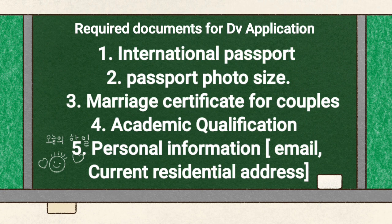The last requirement is your personal information. You need to have an email address. You also need a phone number, but the phone number is not that important — it's optional, you can add it or not. And you need to add your current residential address — you need to know your house address so that you can add it in the application.